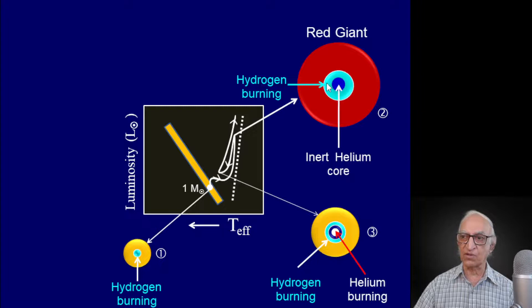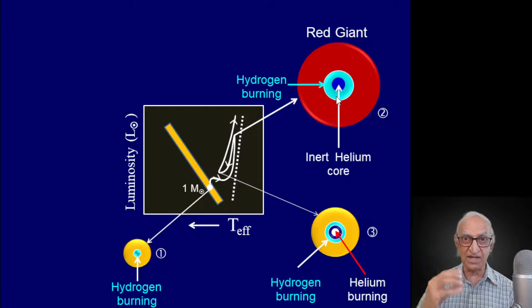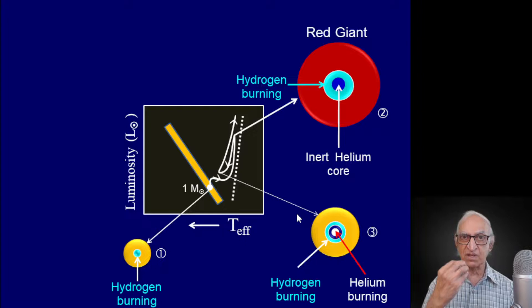Then the core will get hot because there is a furnace surrounding the central inert helium core where hydrogen is being converted to helium. That energy will conduct into the helium core, and the helium core will finally attain a temperature of 100 million degrees, helium will fuse, and carbon will begin to form. Because of the sudden energy generation, the helium core will expand, and when the core expands, the star contracts.